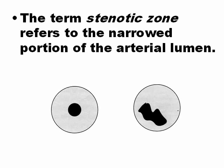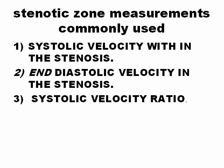The stenotic zone is the area of narrowing in the artery. The most important measurement commonly used is the peak systolic velocity within the stenosis — more than 125 cm per second indicates the beginning of stenosis. The end-diastolic velocity in the stenosis is also important and complements the diagnosis. Another measure is the ratio between the velocity in the area of stenosis and the velocity in areas without stenosis — comparing the internal carotid artery with the common carotid artery. When that ratio is more than 3, it helps diagnose arterial stenosis.